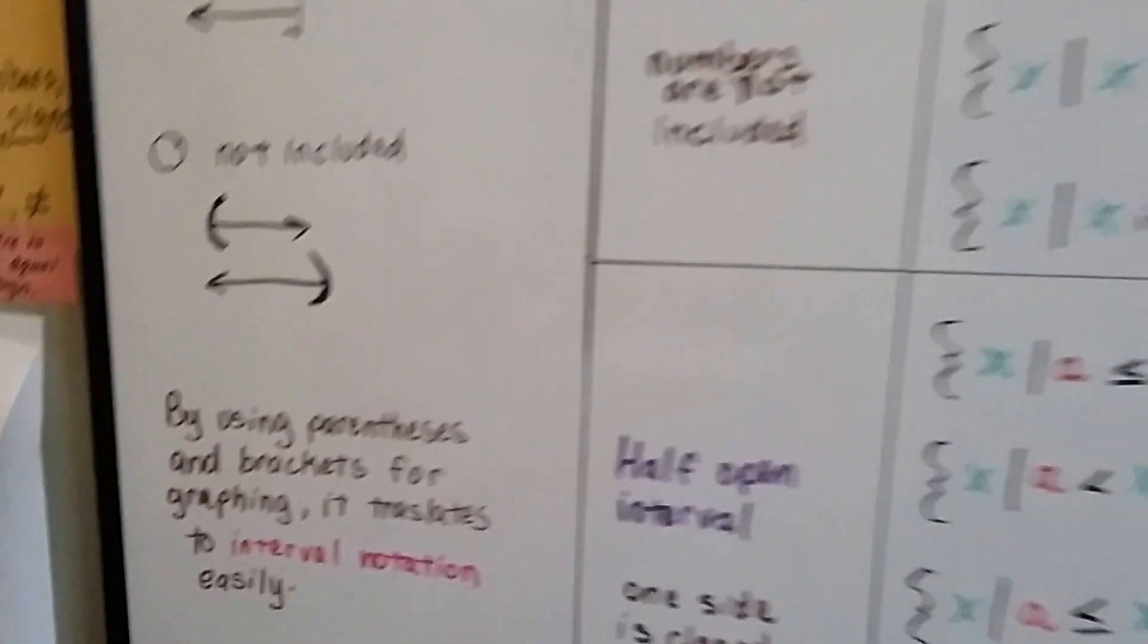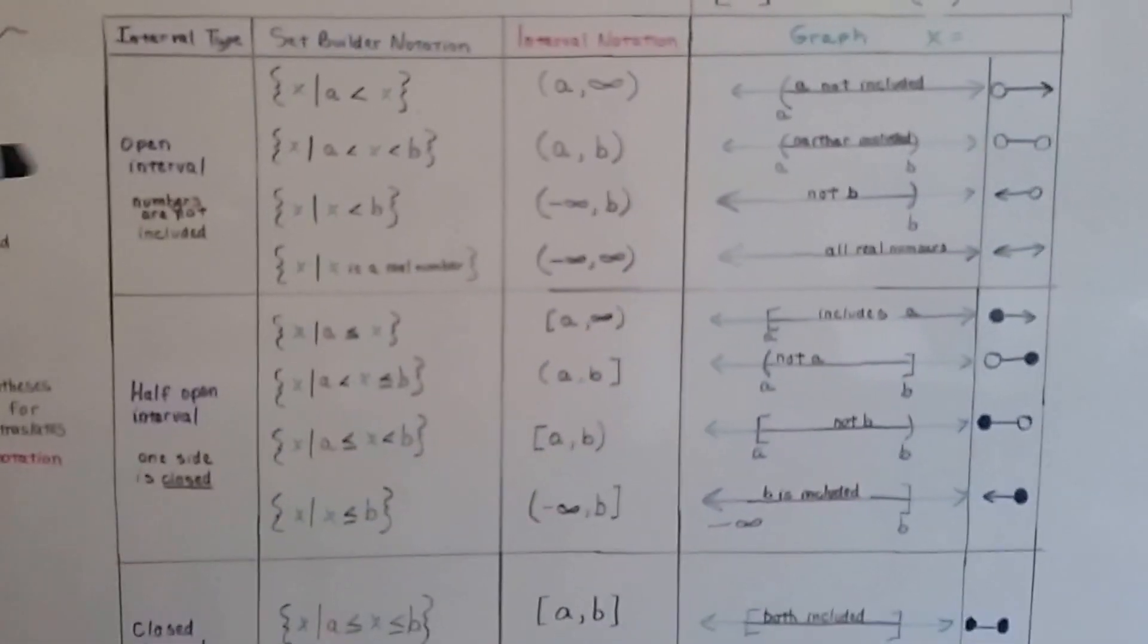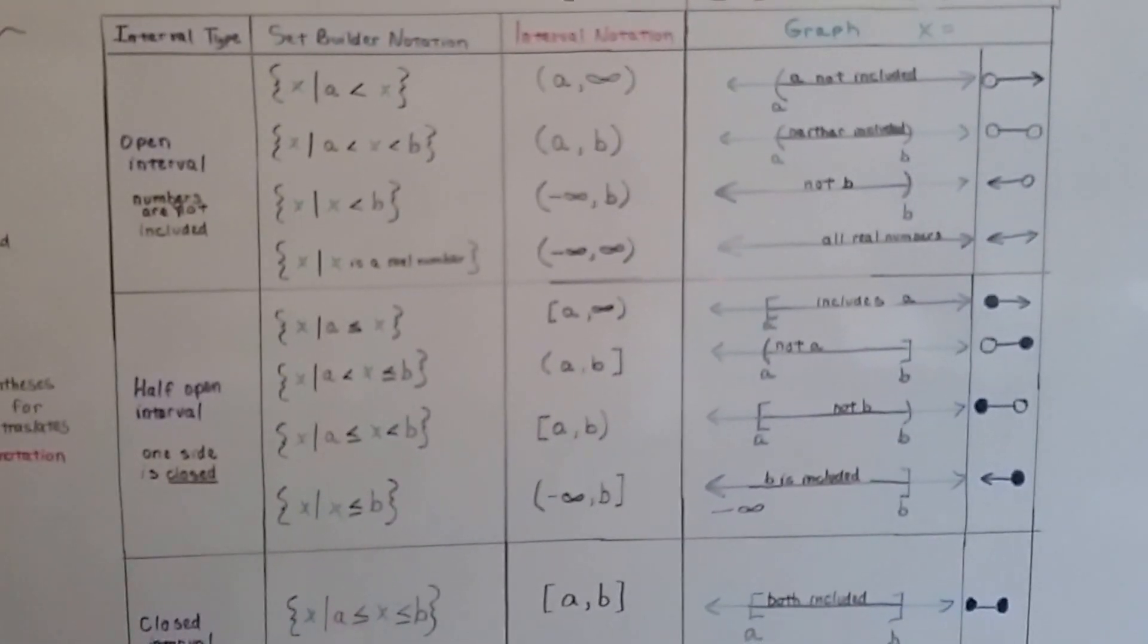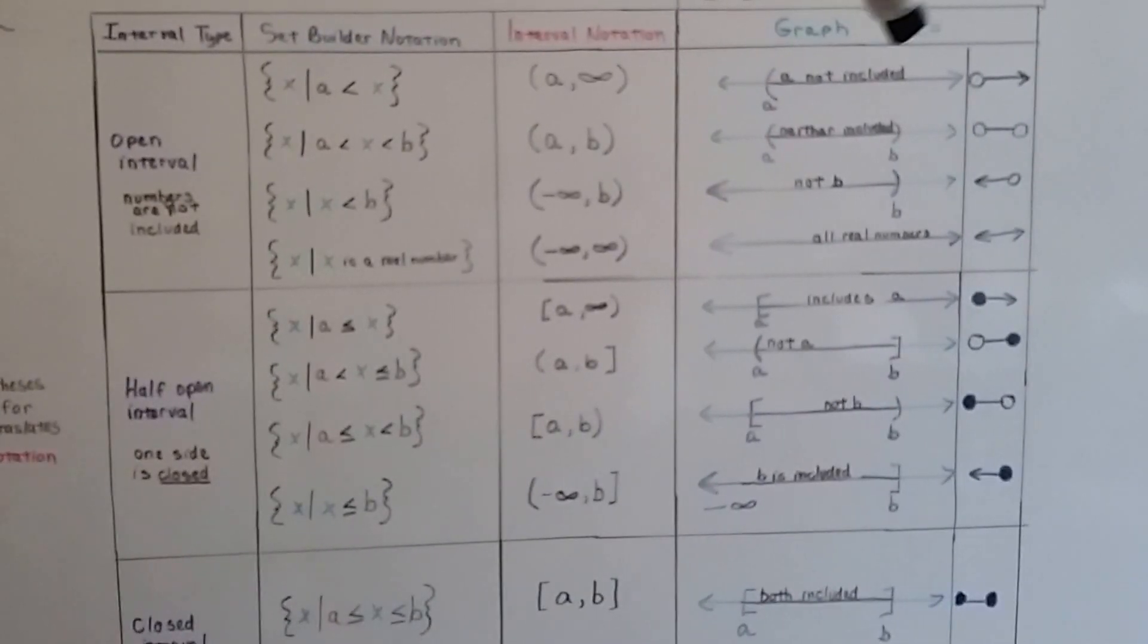So let me step back and show you this big chart I've got here, and this is what we're going to go over. We've got the type of interval, we've got Set Builder Notation, we've got Interval Notation, and we've got our graph that x is equal to.